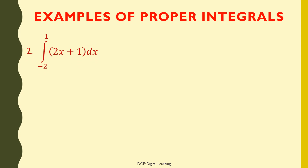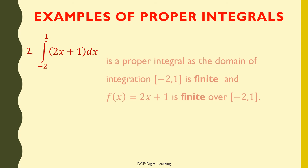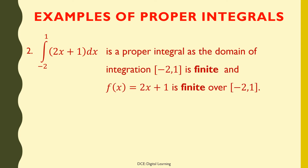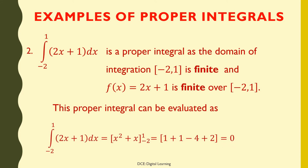Second example: ∫(2x + 1)dx from −2 to 1 is a proper integral, as the domain of integration [−2, 1] is finite and f(x) = 2x + 1 is finite over [−2, 1]. This integral evaluates as ∫(2x + 1)dx from −2 to 1 = [x² + x] from −2 to 1 = (1 + 1) − (4 − 2) = 0, a finite value.